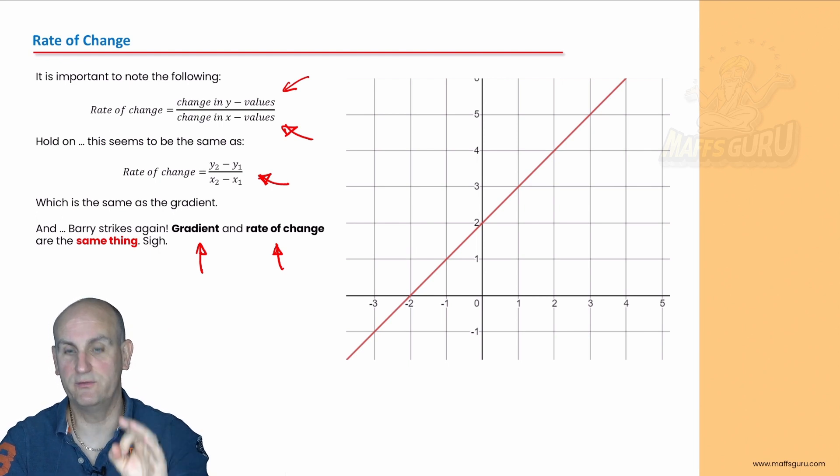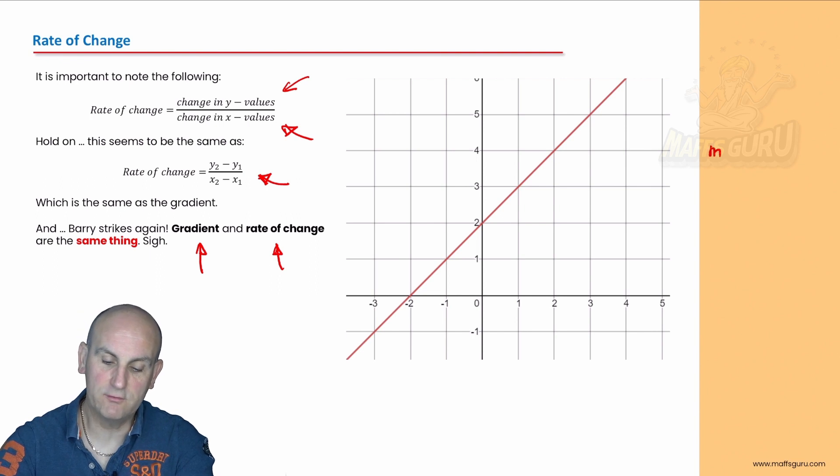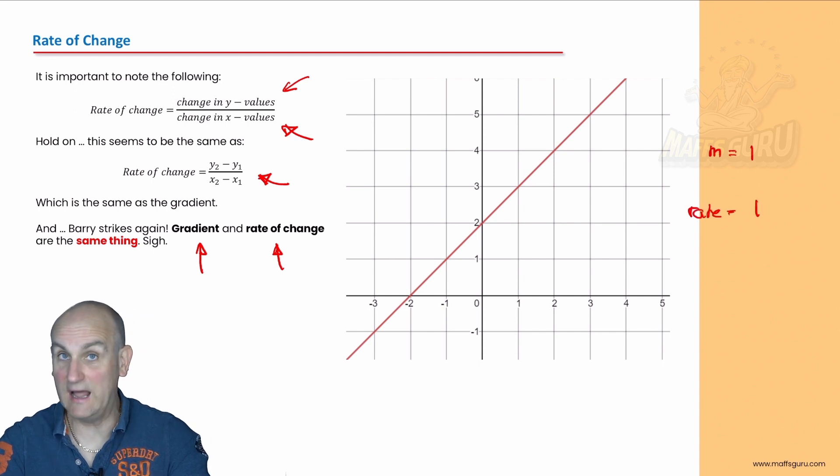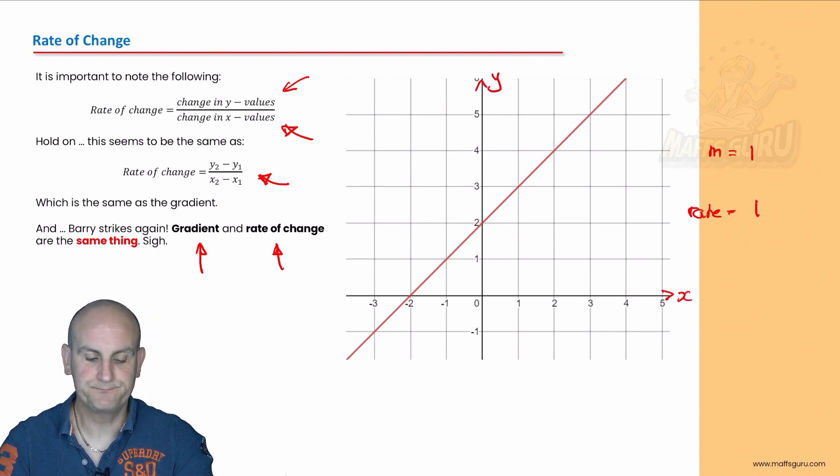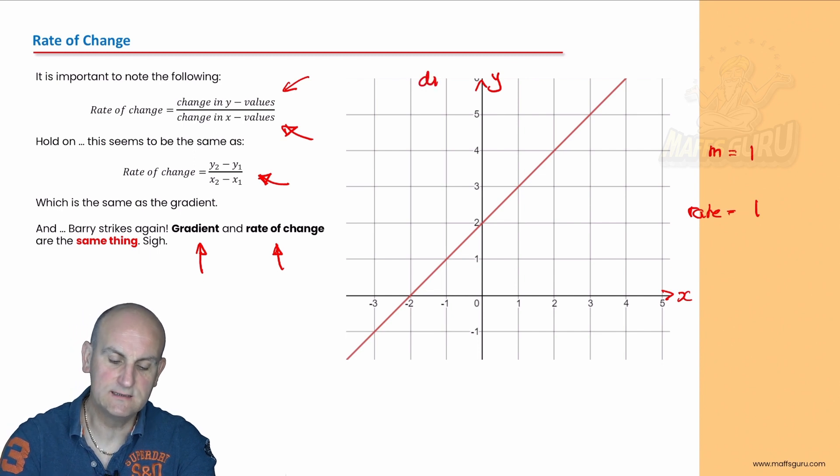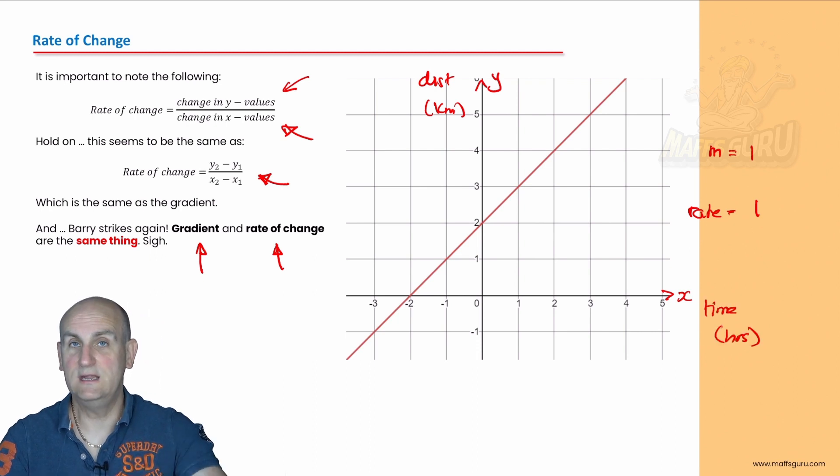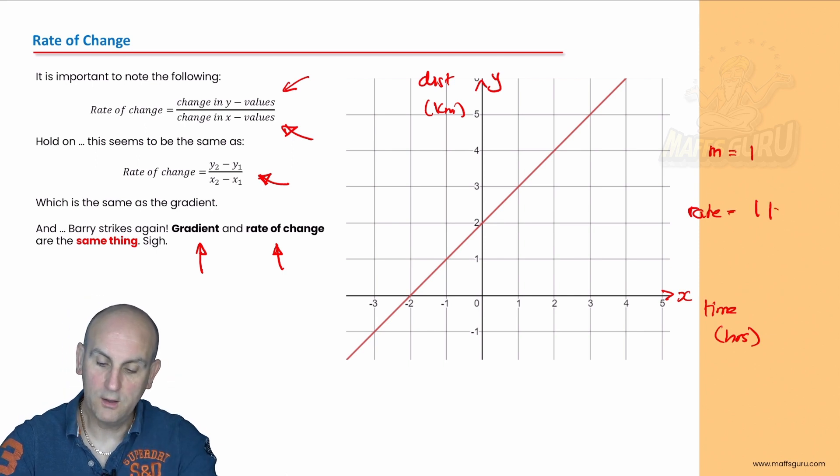Gradient though is just the number. So for example, if I have gradient equals one, that's it, it's just a number. If I want to know what my rate is, it has the same value as my gradient, but I've got to make sure that I put my units on. Now in this situation here, this might be distance in kilometres and this might be time in hours. So my rate would be one kilometre per hour.